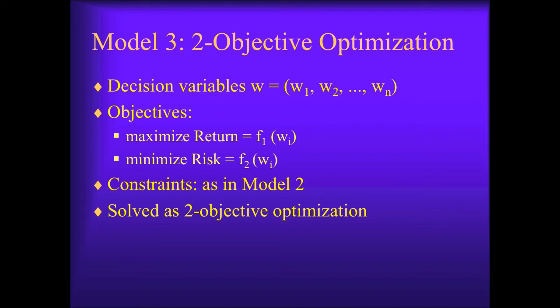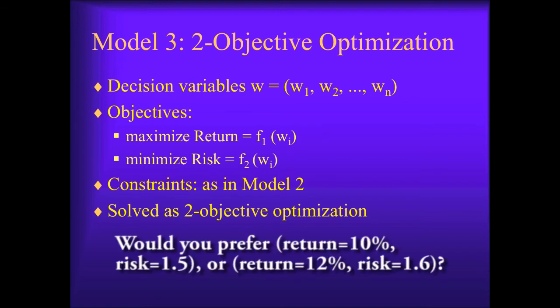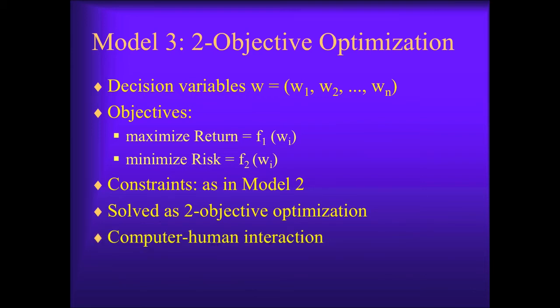The investor would probably find it much easier to choose between concrete portfolios. For example, would you prefer a portfolio with 10% return and a risk of 1.5, whatever the unit is, or one with a 12% return and a risk of 1.6? If you can present the investor with non-dominating solutions from the Pareto front, you may help them to refine their goals.